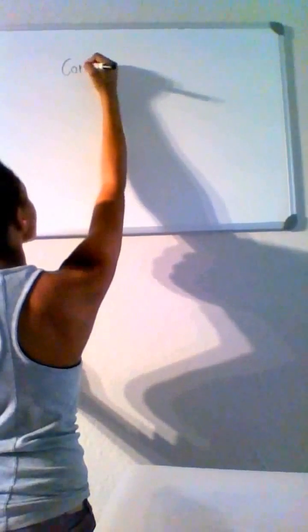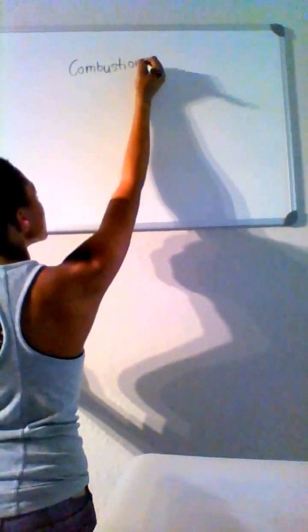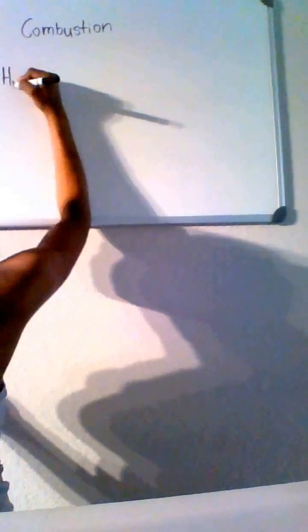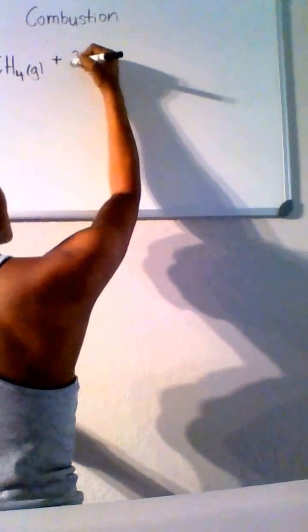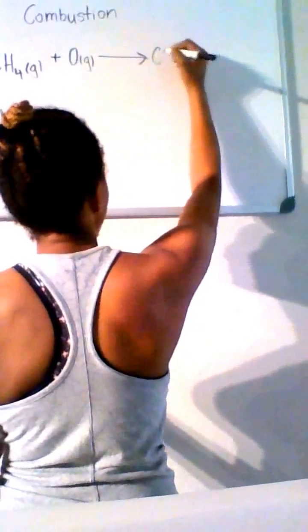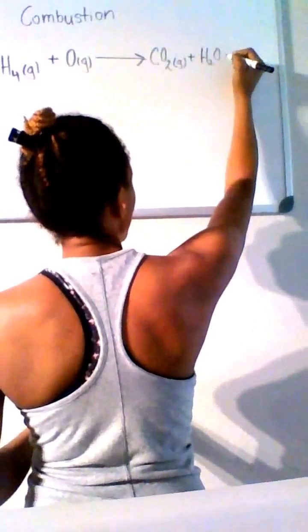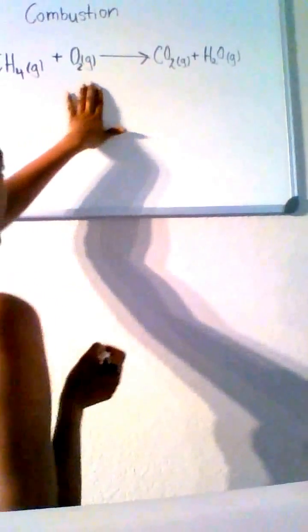So combustion. Let's suppose that methane gas reacts completely with O2 gas to form CO2 gas and H2O. The combustion reaction will look something like this: CH4 gas, denote the gaseous state that it's in, you add in your oxygen to ignite the combustion, and that will eventually yield CO2 gas and water vapor H2O, also in the gaseous state. So all these molecules and diatomic element are in the gaseous state.